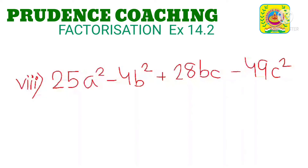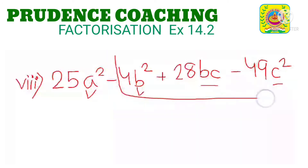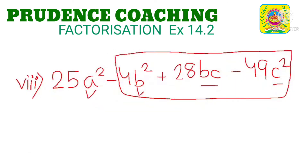Let us start with the next sum. This sum is also important. Here we have a square as the variable, here we have b square, here we have bc, here we have c square. So if we take all these terms together, we can form a minus b the whole square or a plus b the whole square.